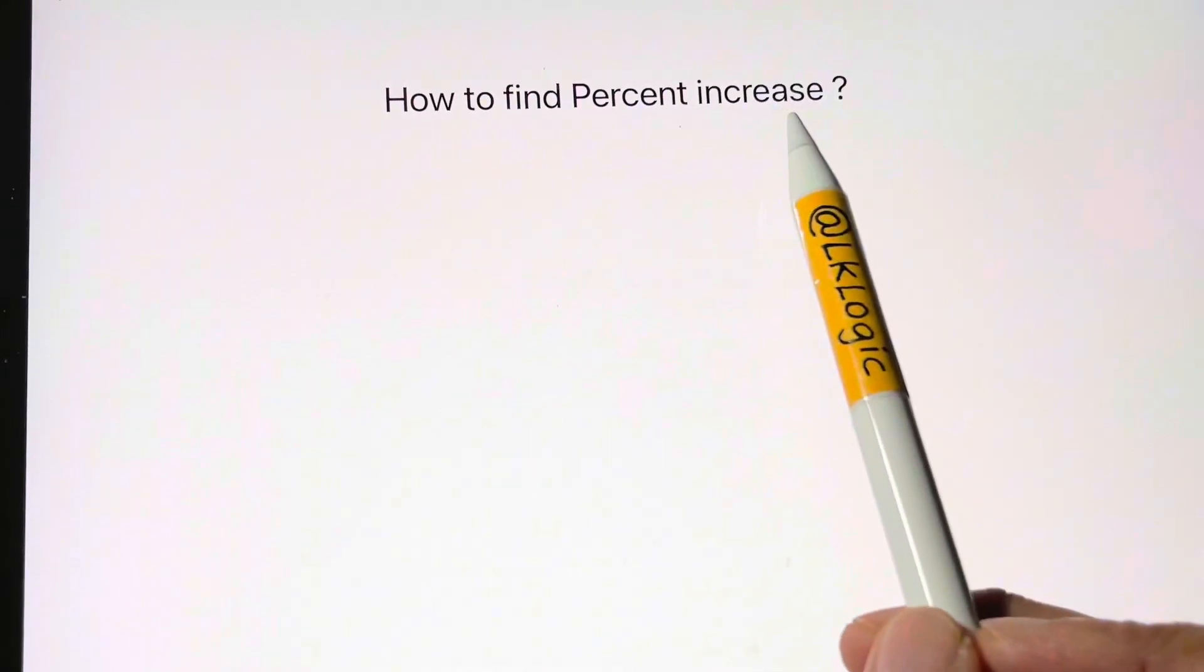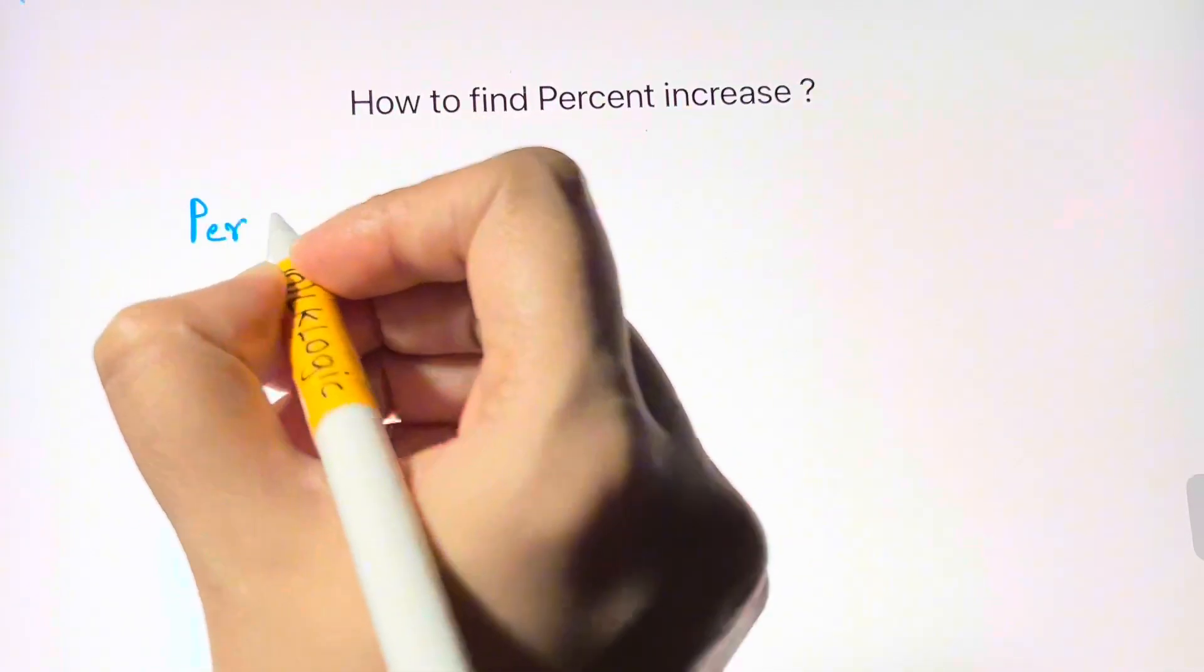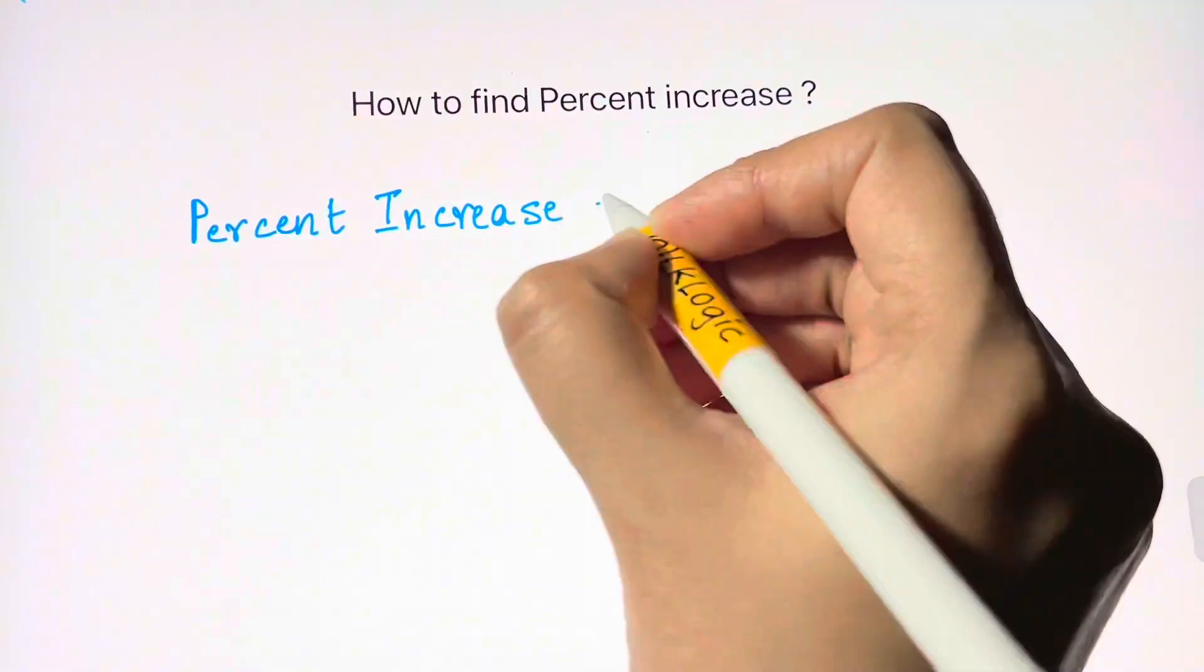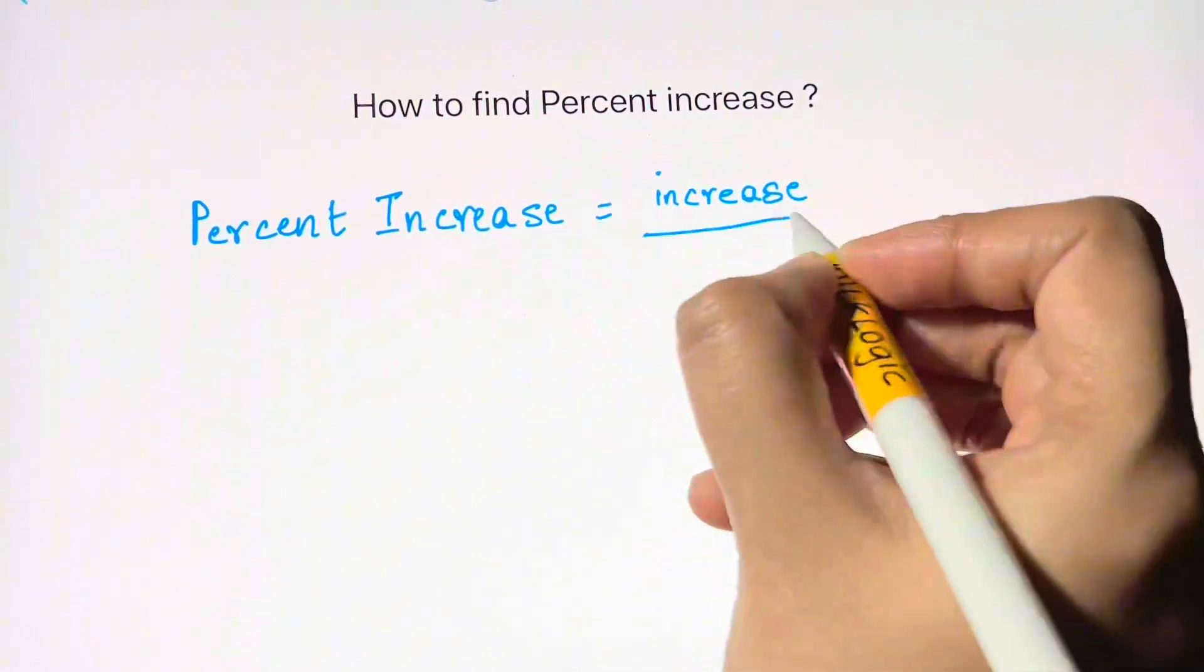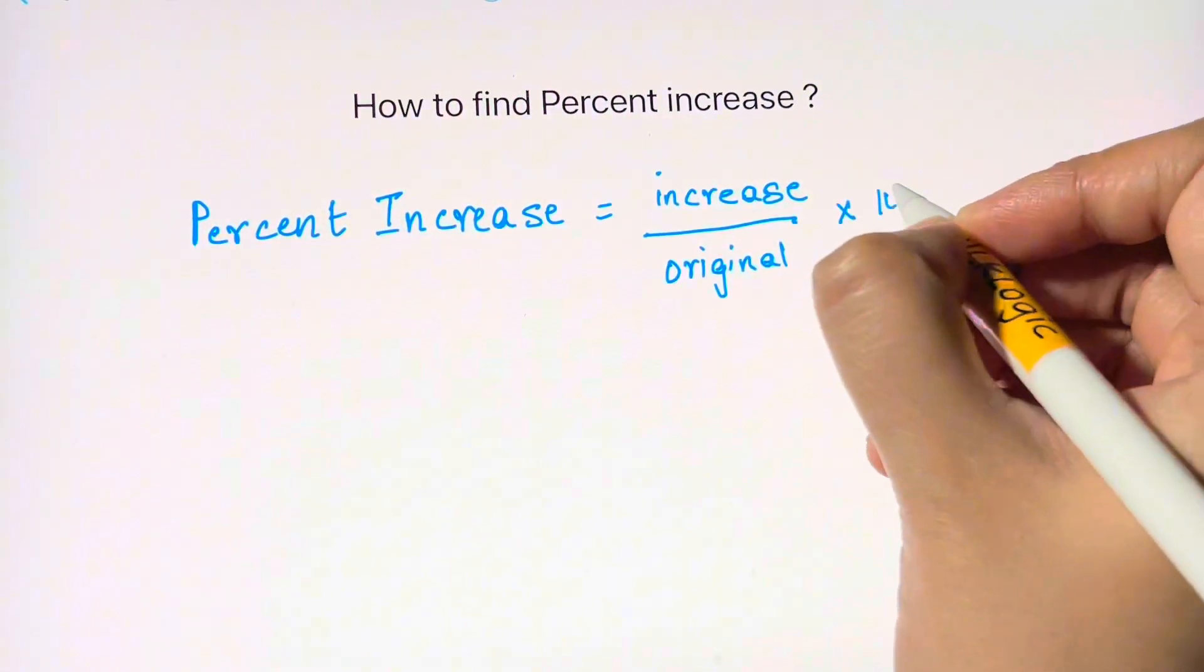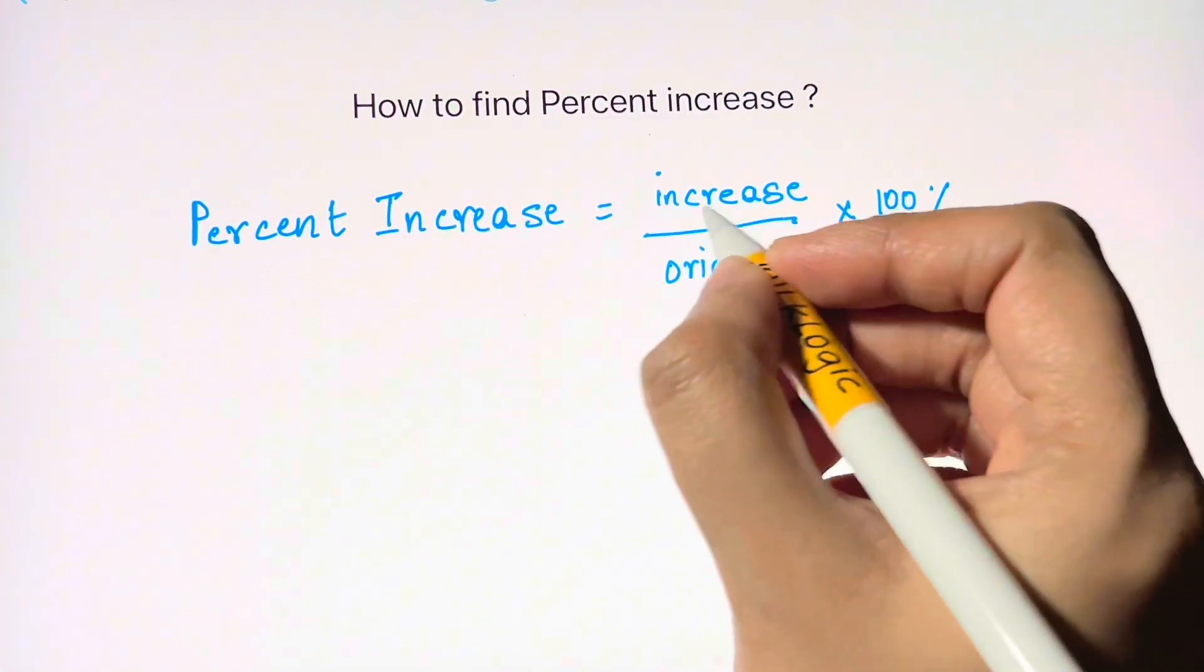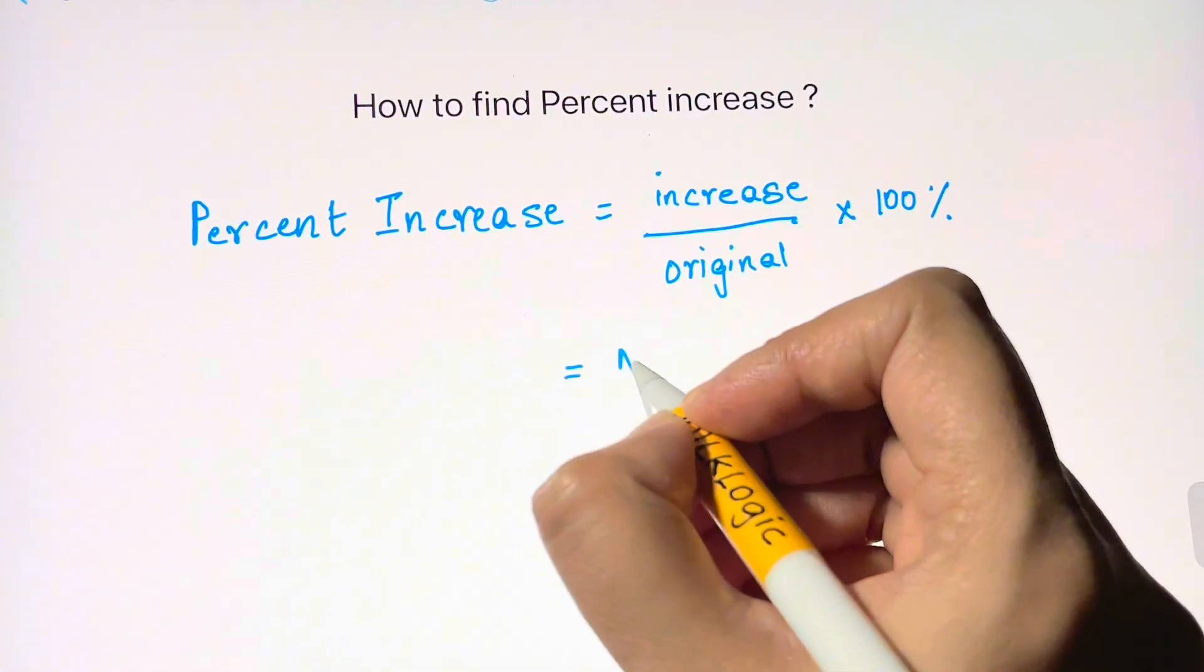Hi guys, in this video we're gonna see how to find percent increase. So percent increase is given by increase by the original value times hundred and attach the percent symbol there. Now what is increase? It is a difference between the two numbers being compared.